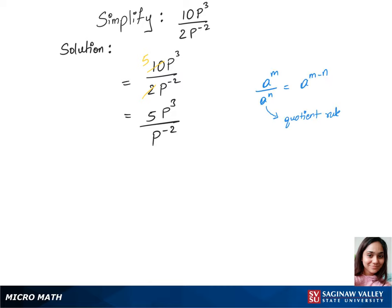Applying the quotient rule, we get 5 times p power 3 minus of minus 2, which gives us 5 times p power 5. That's our answer.